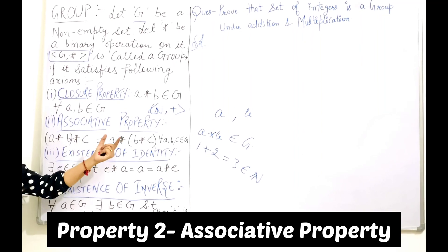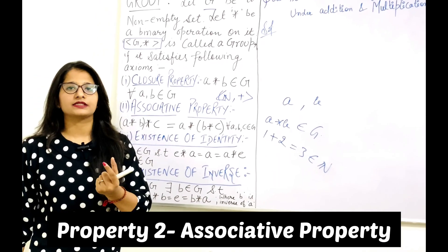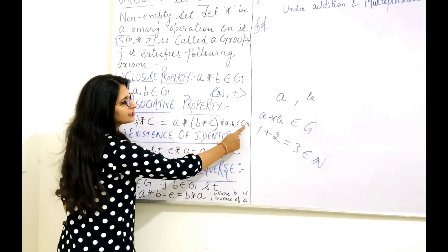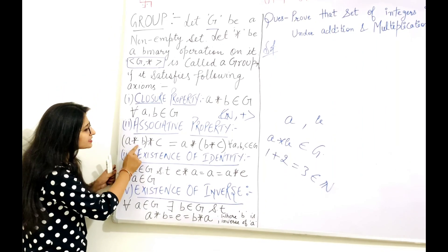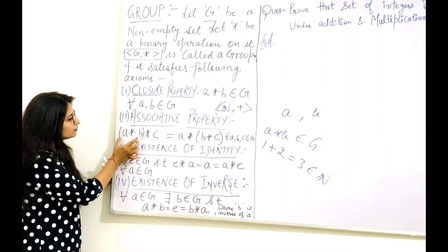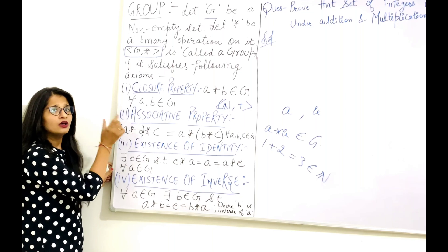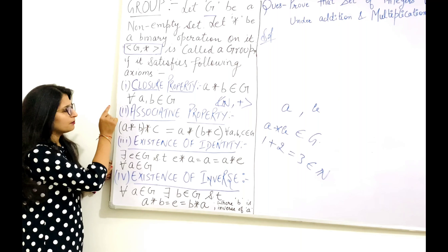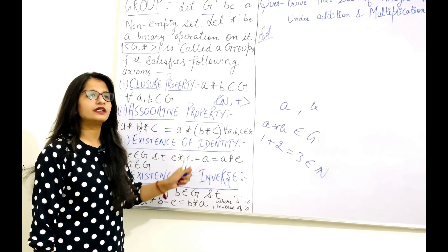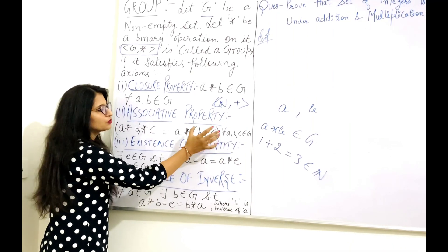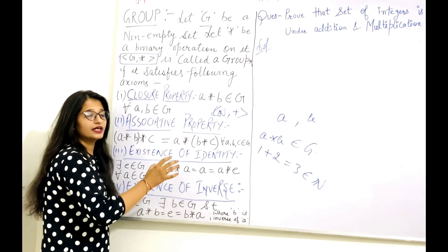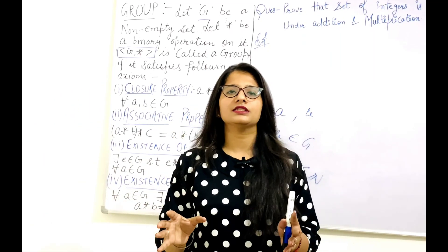The second property is the associative property. In associative property, the key role is played by brackets. We have to fetch three elements A, B, and C from the given set. We check that (A star B) star C must equal A star (B star C). Solve the left side by applying the operation on A and B first, then apply the result with C. For the right side, solve B star C first, then apply that result with A. Both sides must be the same.